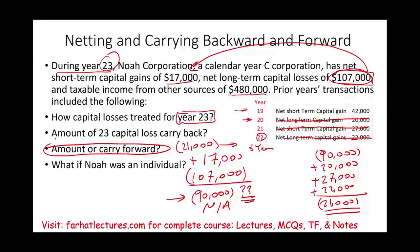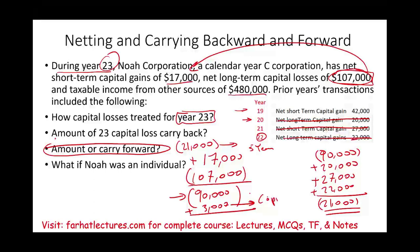Now the question becomes: what if NOAA was an individual rather than a corporation? What could NOAA do? First, NOAA will net the capital gains against the capital losses. NOAA would have, again, $90,000 of excess losses. What do we do with these excess losses? As an individual, we'll be able to use up $3,000 this year as capital losses. Of the $90,000, what's left is $87,000.